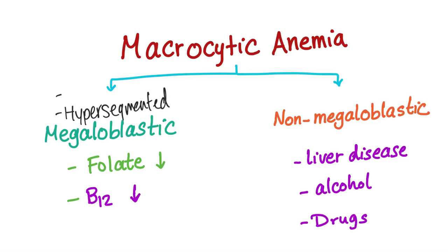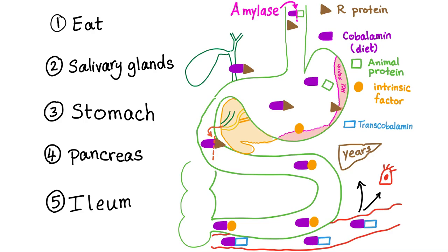Because we also have hypersegmented neutrophils. And we can have pancytopenia and other issues, such as ineffective hematopoiesis.